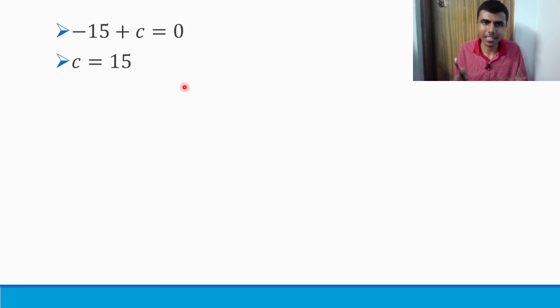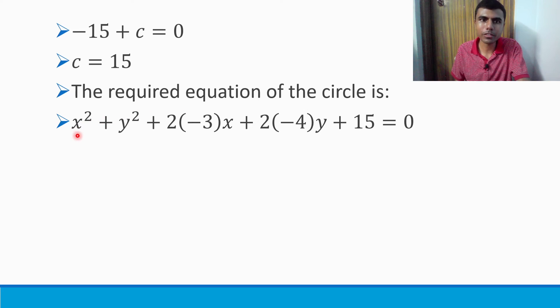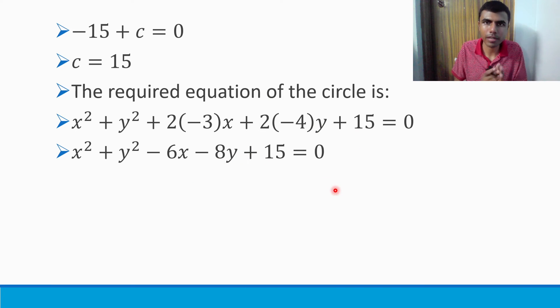Ultimately, we got g, f, and c. The required equation of the circle is x² + y² + 2(-3)x + 2(-4)y + 15 = 0, which simplifies to x² + y² - 6x - 8y + 15 = 0. Thank you very much for staying with me up till now. I made other questions related to circles as well.